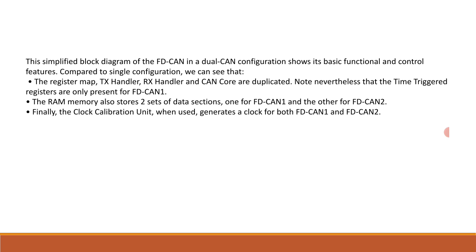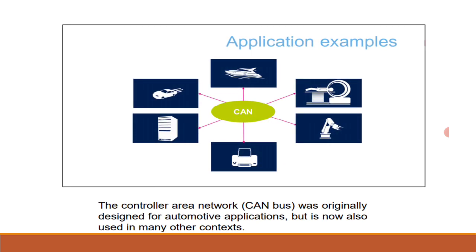Now let's see some application examples of CAN. Examples include a radiotherapy machine in the medical domain, robotic arms, shipping, automotive, and network devices. CAN was originally designed for automotive applications but is nowadays also used in many other contexts.